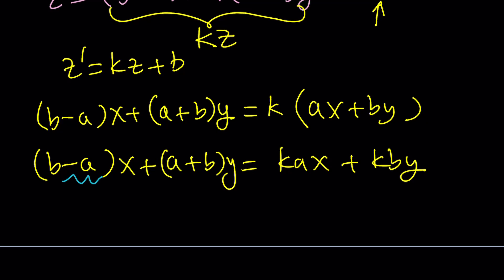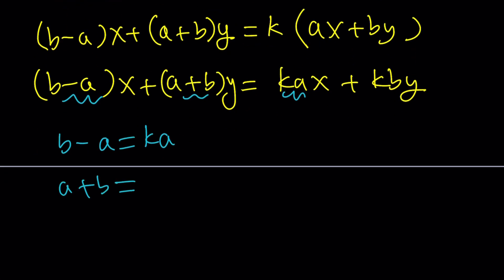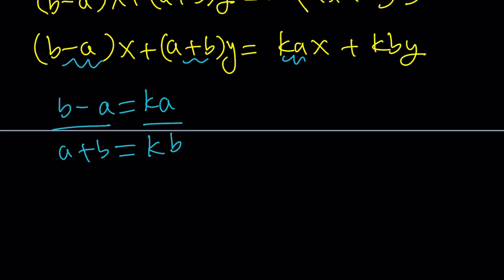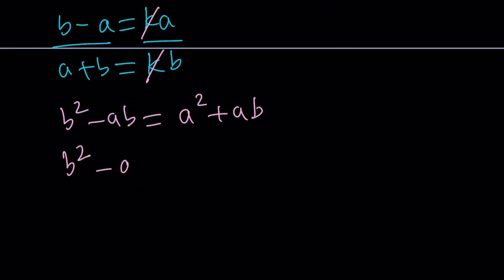I can go ahead and divide these expressions side by side, and hopefully that will give me something helpful. k is going to cancel out. And from here, we get, after cross-multiplying, b squared minus a·b equals a squared plus a·b. Let's go ahead and put everything on the left-hand side: b squared minus 2a·b. And then leave the a squared on the right-hand side because I'm about to complete the square.